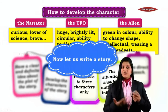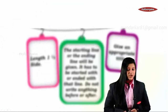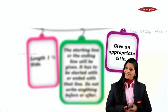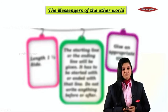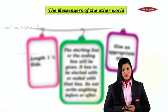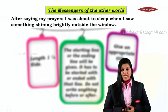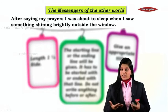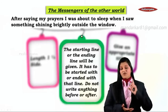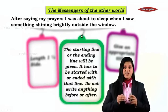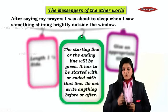Now, let us write a story based on all this. First of all, the most important thing you will have to do is give an appropriate title. So let's give a title to our story: 'The Messengers of the Other World.' Now, do you remember you were given the first line of the story? That is, 'After saying my prayers, I was about to sleep, when?' And we had decided to continue the line as, 'I saw something shining brightly outside the window.' In the format, you should never write anything before the given line — only complete it; do not change it, do not modify it.